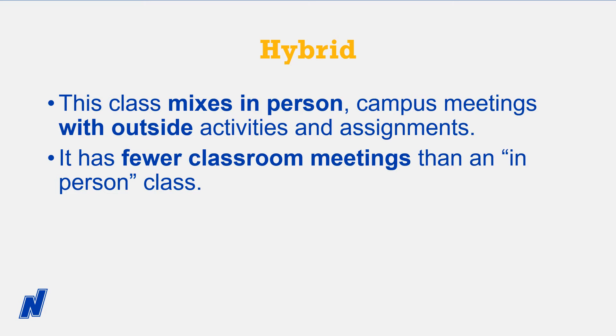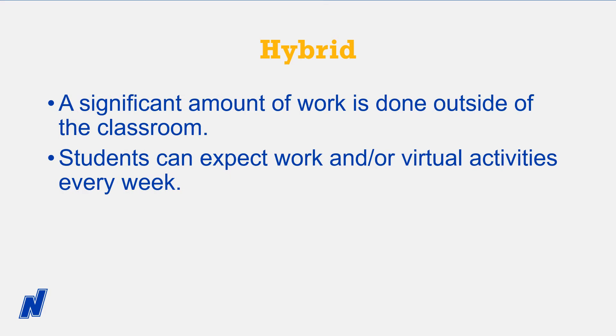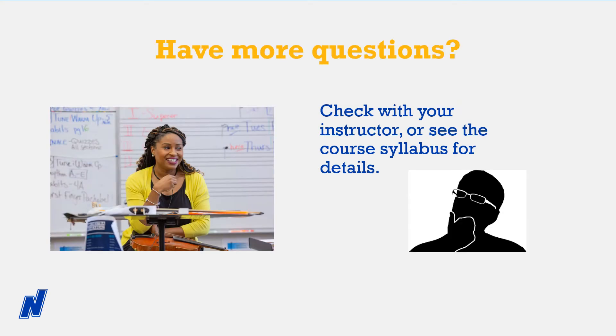The hybrid course type is a mix of in-person, on-campus meetings and outside activities and assignments. This class has fewer classroom meetings than in-person courses. But be aware, a significant amount of work will be done by the student outside of the classroom. Every week you can expect work or virtual activities, and these are typically posted on the learning management system. For details, it's a good idea to reach out to your instructor and review the course syllabus.